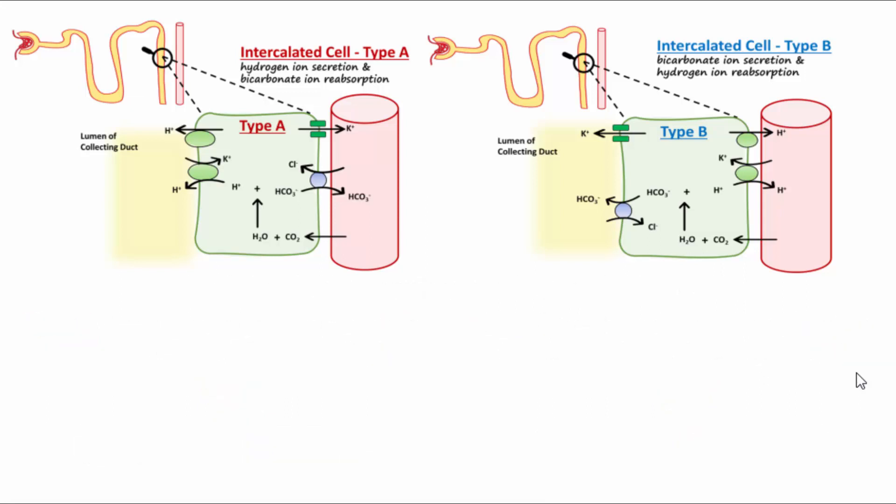Notice that as hydrogen ions move across the membrane, potassium ions are moving the opposite direction. For this reason, acid-base imbalances can disrupt normal potassium concentrations in the blood.